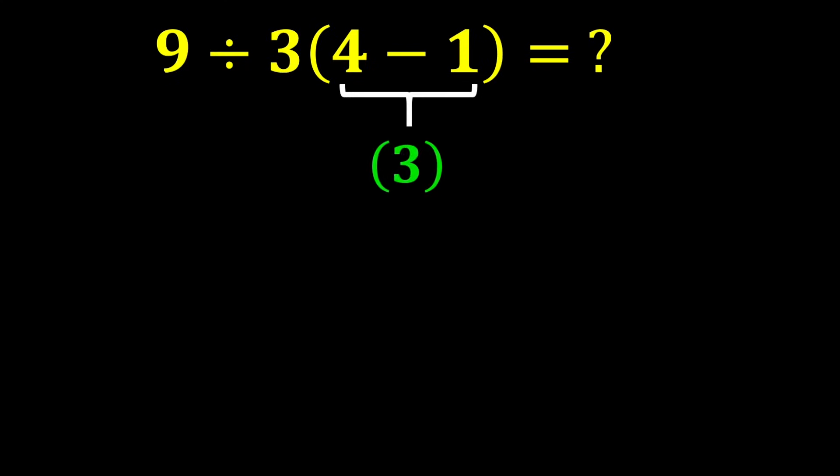4 minus 1 gives us 3, and 3 multiplied by 3 gives us 9. In the end, 9 divided by 9 gives us 1.